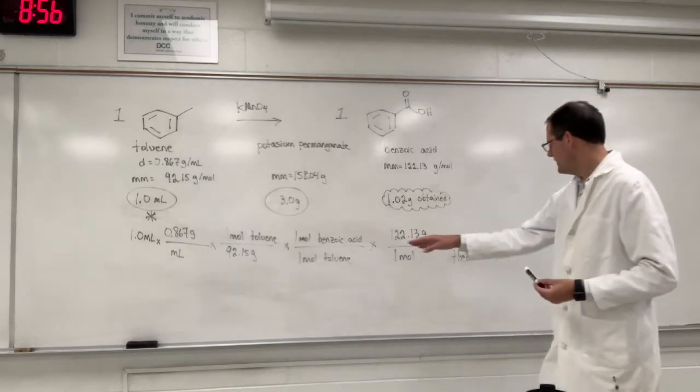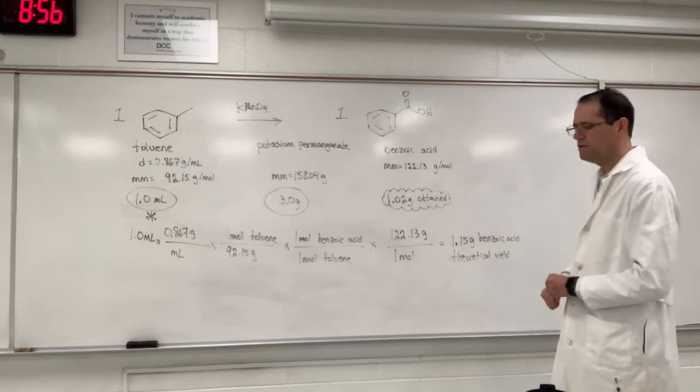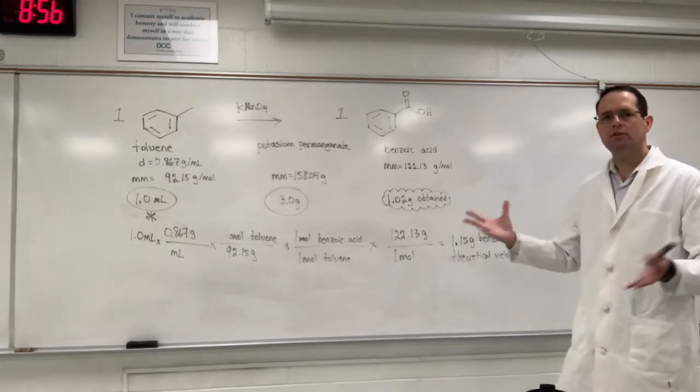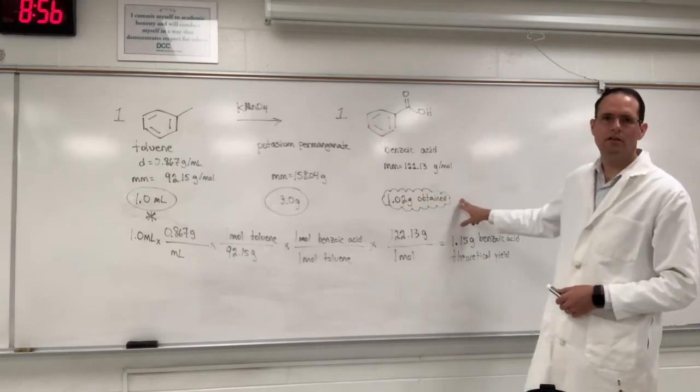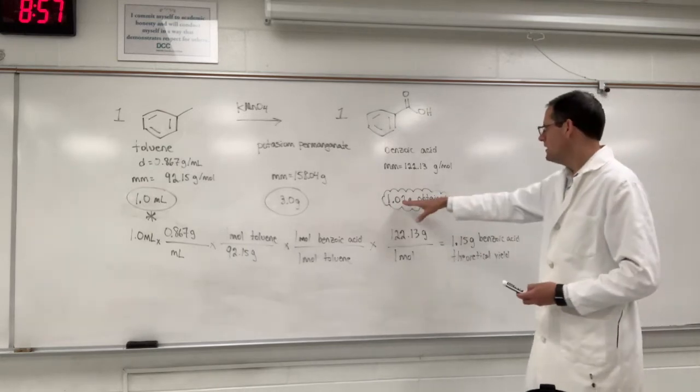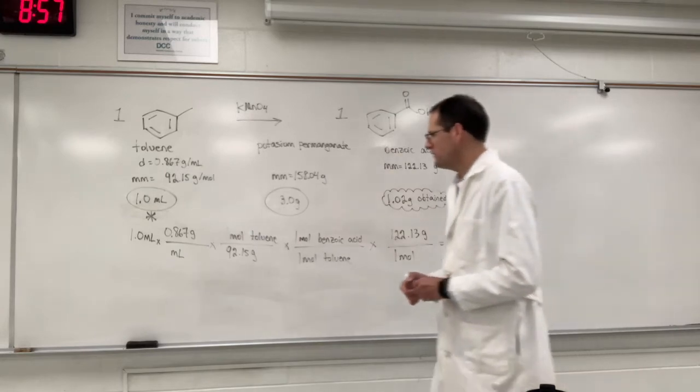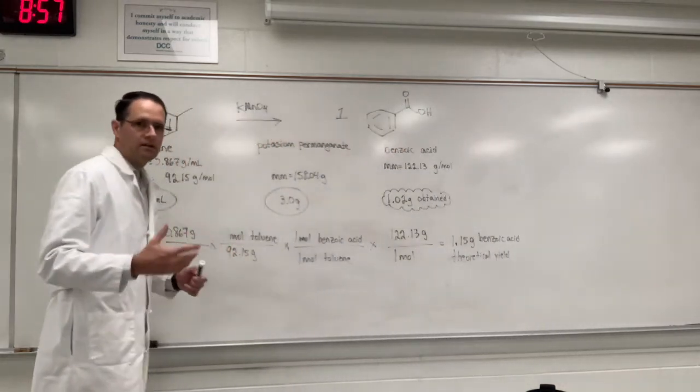Now, you normally figure that out before you start an experiment. You set up your lab notebook and have everything tidied. And then you do the lab experiment and then you realize, oh, I didn't do as well as I thought I did. You get 1.02 grams, for example. So here we want to calculate the percent yield.